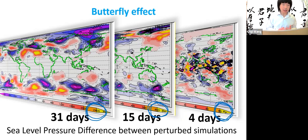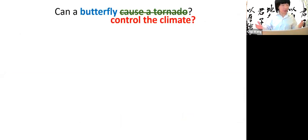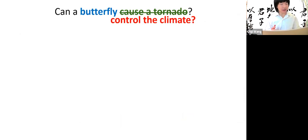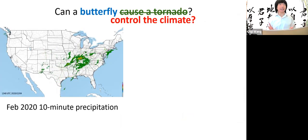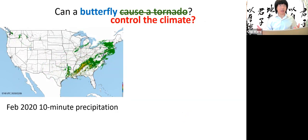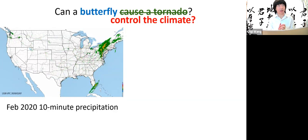If you look after four days, the scale shows a 60 Pascal difference. After 15 days, the scale becomes 600 Pascals. After a month, the difference becomes thousands of Pascals. This is the traditional notion of butterfly effect: if you make a small perturbation, the simulations or the dynamical systems become very different after a while. However, today I'm going to be talking about something different.